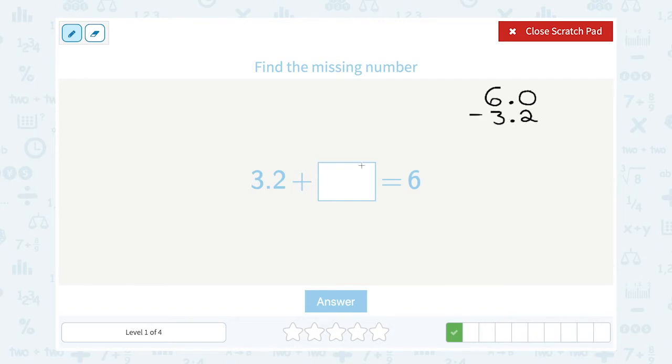And that's going to leave me with what the other number should be, right? We're just working backwards. If these two add up to 6, then 6 minus the 3.2 should leave me with the other part that made up the 6.